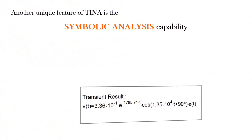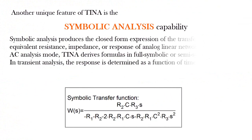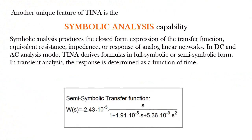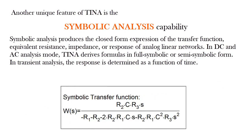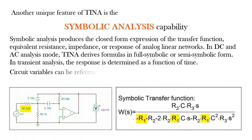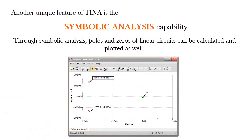Another unique feature of TINA is its symbolic analysis capability. Symbolic analysis produces the closed-form expression of the transfer function, equivalent resistance, impedance, or response of analog linear networks. In DC and AC analysis mode, TINA derives formulas in full symbolic or semi-symbolic form. In transient analysis, the response is determined as a function of time. Poles and zeros of linear circuits can be calculated and plotted as well.